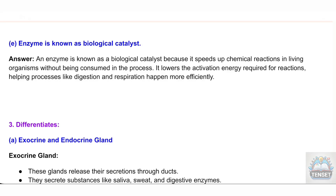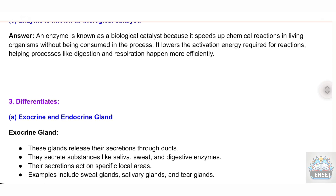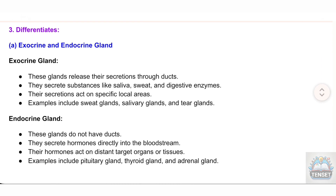Question 3: Differentiate. A) Exocrine and endocrine gland. Exocrine gland: These glands release their secretions through ducts. They secrete substances like saliva, sweat, and digestive enzymes. Their secretions act on specific local areas. Examples include sweat glands, salivary glands, and tear glands.